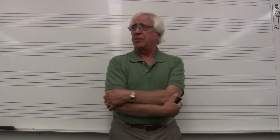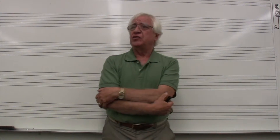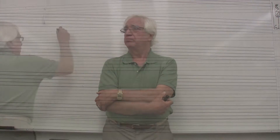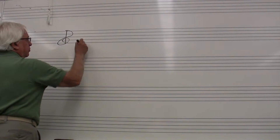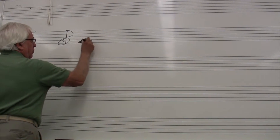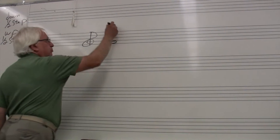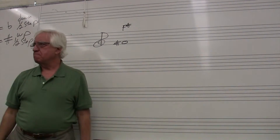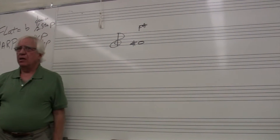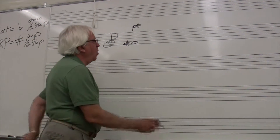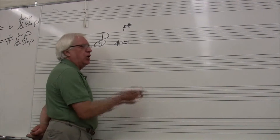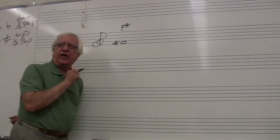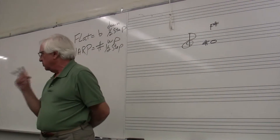A chromatic half step above C is C-sharp — it's got the same letter name. Now here I am on F-sharp. I want a diatonic half step above F-sharp.